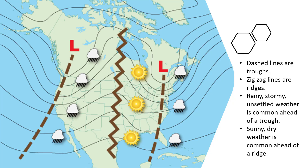The dashed lines are troughs and the zigzag lines are ridges. Rainy, stormy, unsettled weather is common ahead of a trough. Sunny, dry weather is common ahead of a ridge.